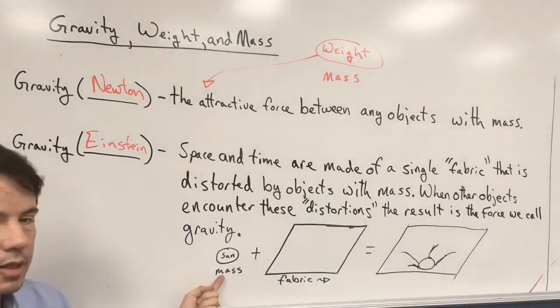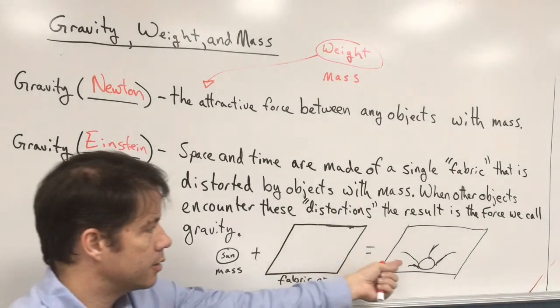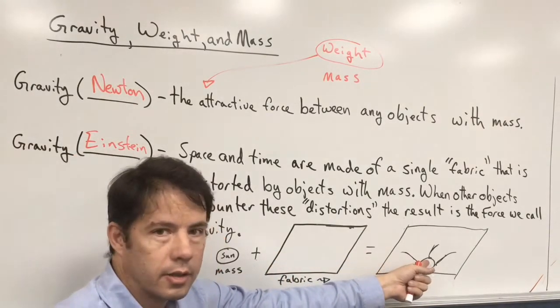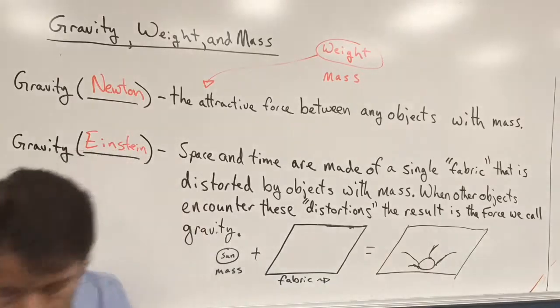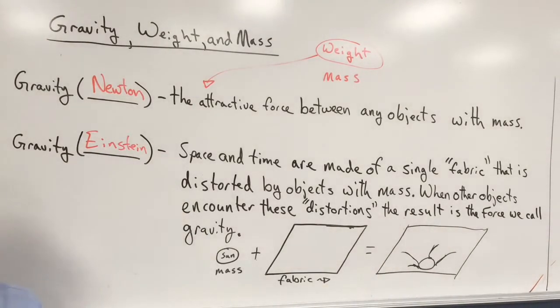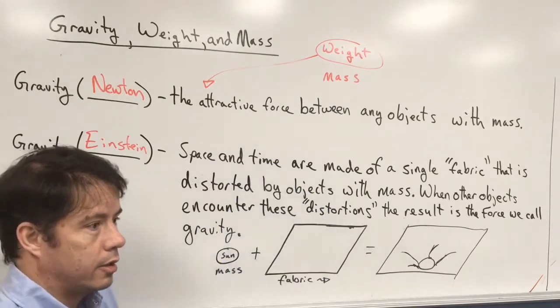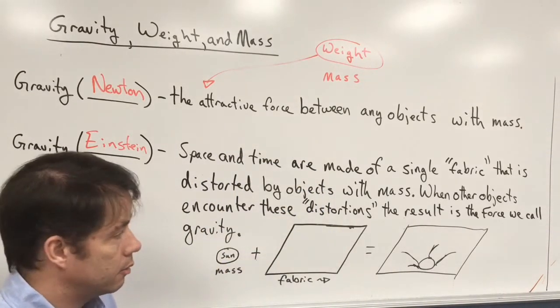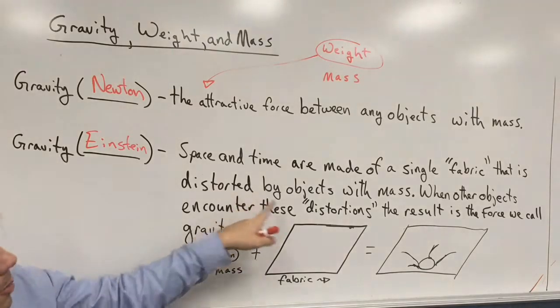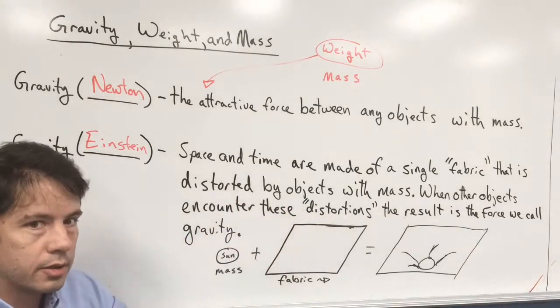This fabric is distorted by objects with mass. So I'm going to take the sun, and I'm going to put it on my blanket, and it's going to distort or cause the fabric to bend. So much like you can imagine taking this bowling ball, and I set it on a blanket, it's going to cause the blanket to bend in the middle. An object with mass is going to cause this bending.